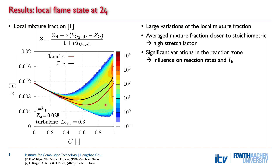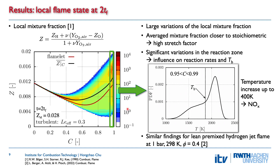The large variations of mixture fraction in the reaction zone, around C = 0.8, influence reaction rates and burnt temperature. Significant variations in temperature are found, with a temperature increase of up to 400 K compared to the burnt temperature of the unstressed flamelet solution. This is of practical interest for hydrogen engines, because such high local temperatures might promote NOx formation via the thermal pathway. Similar findings were also reported by Berger and coworkers for lean premixed jet flames at lower temperature and pressure.